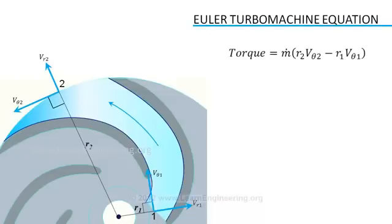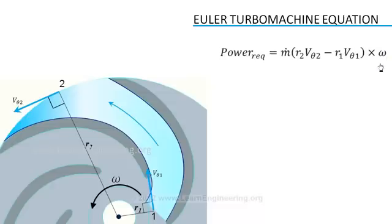If the channel is rotating at an angular velocity omega, the power required to maintain the fluid flow will be torque multiplied by angular velocity. Omega into radius becomes channel velocity, or blade velocity.